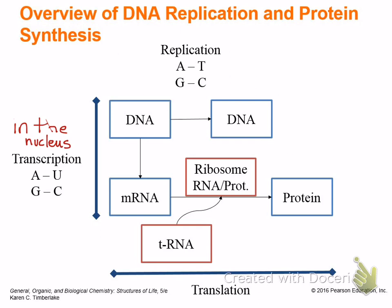DNA gets unwound, RNA polymerase makes a copy of RNA, and there's some processing done because when the mRNA comes out it has sections that aren't usable — those sections have to be cut out. Then it goes through the nuclear wall and is pushed out into the cytosol — the fluid inside the cell — where the ribosomes are, and that's where translation takes place.